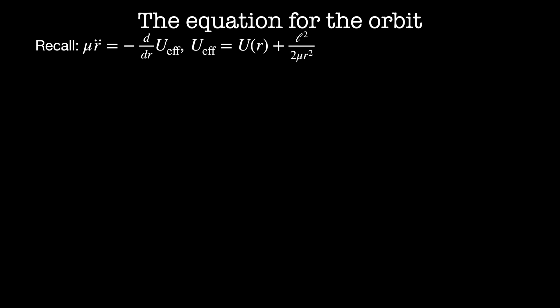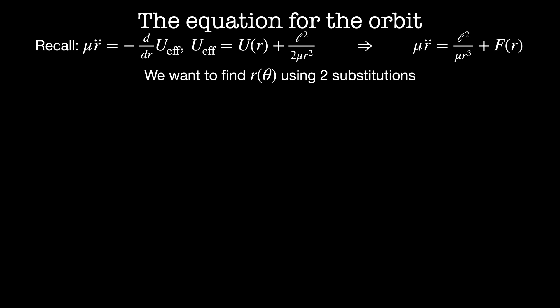Now let's solve the orbits analytically. Starting with the equation for an orbit in a generic central force: mu r-double-dot equals minus d/dr of the effective potential, where U_effective equals the central potential plus the angular momentum squared divided by 2 mu r squared. Written as a Newtonian force, the radial force equals the centripetal term l²/mu r³ plus the central force. We'll solve for r as a function of theta using two substitutions: u = 1/r, and changing time derivatives to angular derivatives using the chain rule.